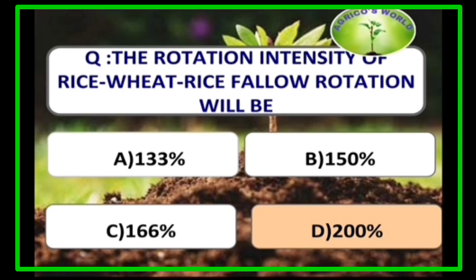The rotation intensity of rice–wheat–rice–fallow rotation: the formula for rotation intensity is (number of crops per rotation ÷ number of seasons) × 100. Here the number of crops per rotation is 3 (rice, wheat, and again rice). Taking 6 months for each crop gives 1.5 years. So 3 ÷ 1.5 × 100 = 200%.